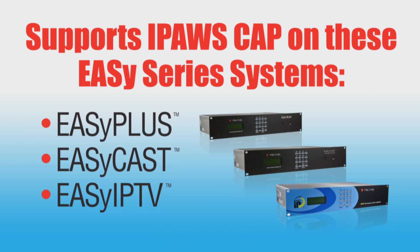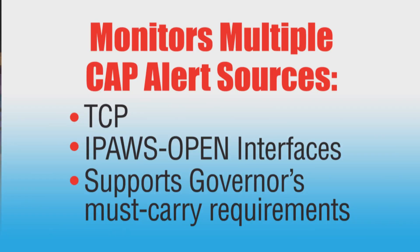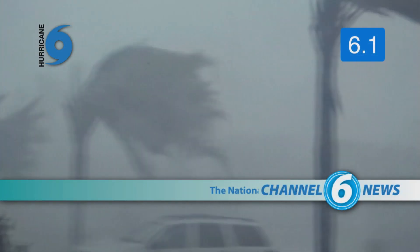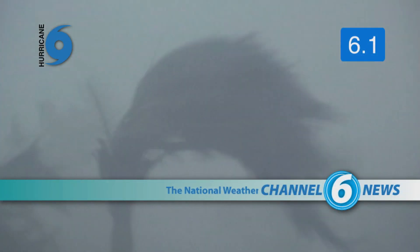EasyCAP is available as a standalone software solution or as an integrated server package with the software pre-installed. Both versions support up to eight EasySeries Encoder-Decoder units simultaneously and can receive CAP alerts from multiple sources. They also directly support governor-must-carry alerts.